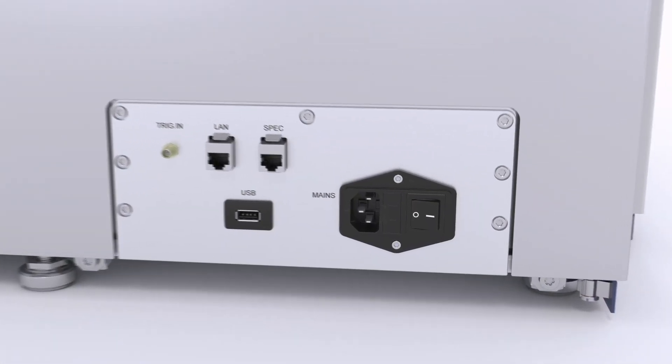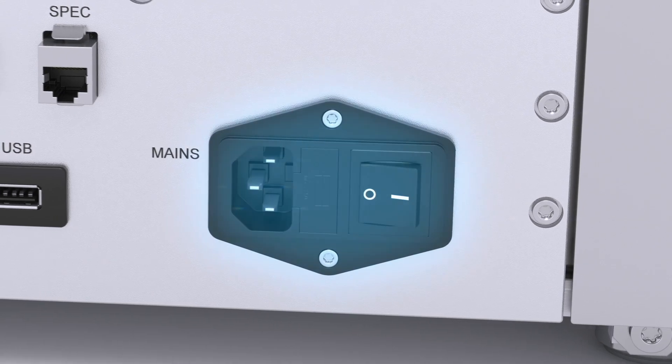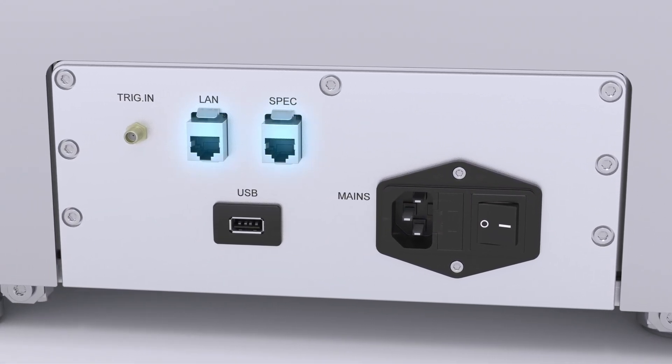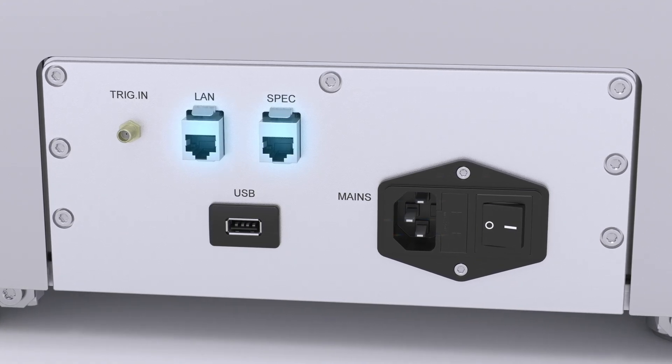On the back of the system, you can find the main connections and the power switch for the system. And in addition, the back panel provides two Ethernet connectors. One is used for the communication to the NMR PC. The other one is currently not in use but ready for future purposes.